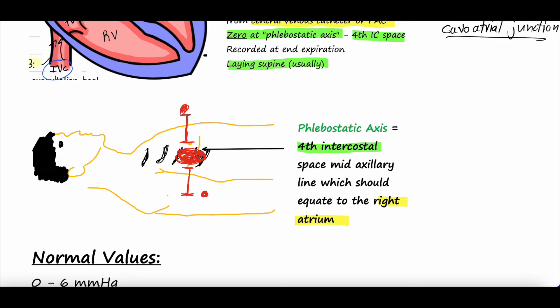You want to zero the pressure right at the phlebostatic axis — at the right atrium. If you zero it too low, the measurement will read falsely high by that offset; if you zero it too high, the measurement will read falsely low. It needs to be zeroed right at the cavo-atrial junction. The phlebostatic axis is at the fourth intercostal space, mid-axillary line — the armpit midline — which is about where the heart lies when a patient is on their back.